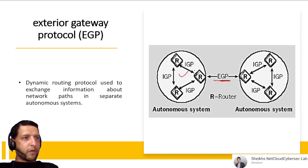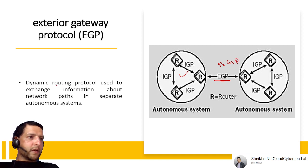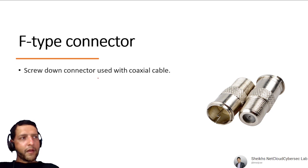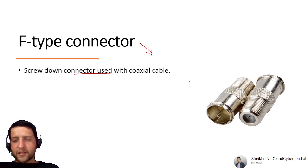Exterior Gateway Protocol (EGP) operates between autonomous systems — examples include BGP (Border Gateway Protocol), which is a dynamic routing protocol used to exchange information about network paths between separate autonomous systems. Interior Gateway Protocol (IGP) operates within an autonomous system. The F-type connector is used with coaxial cable — note: it is not for fiber optic, it is for coaxial cable.